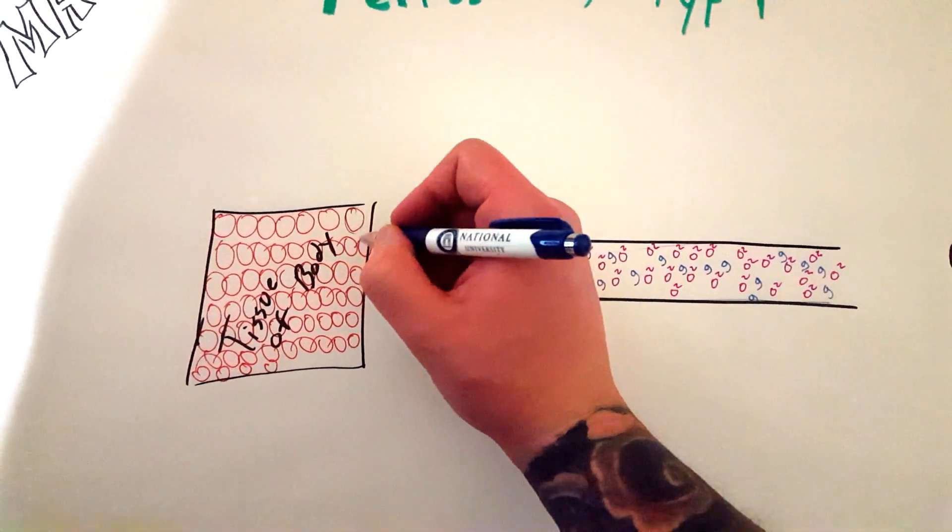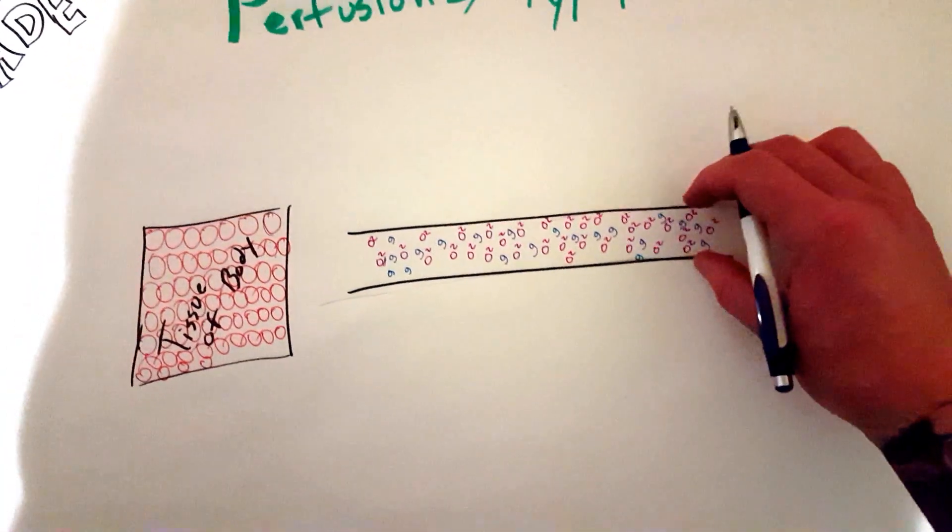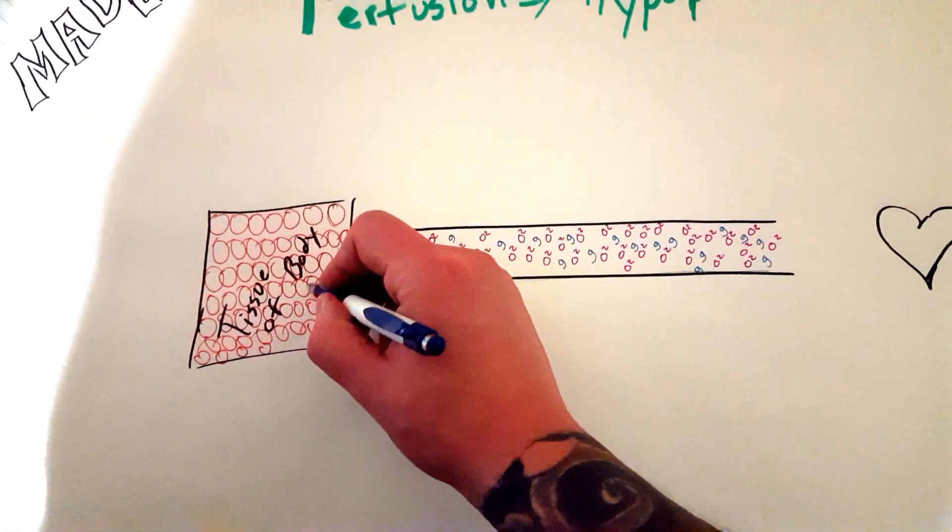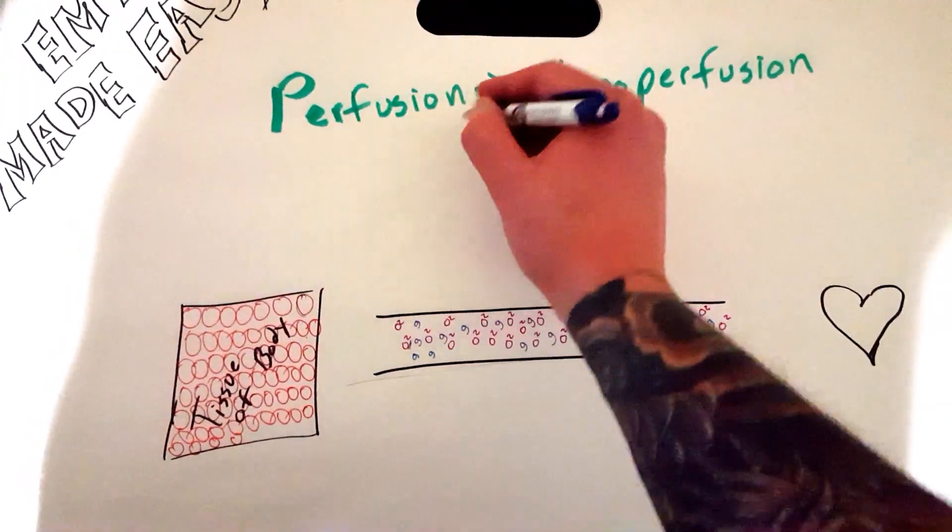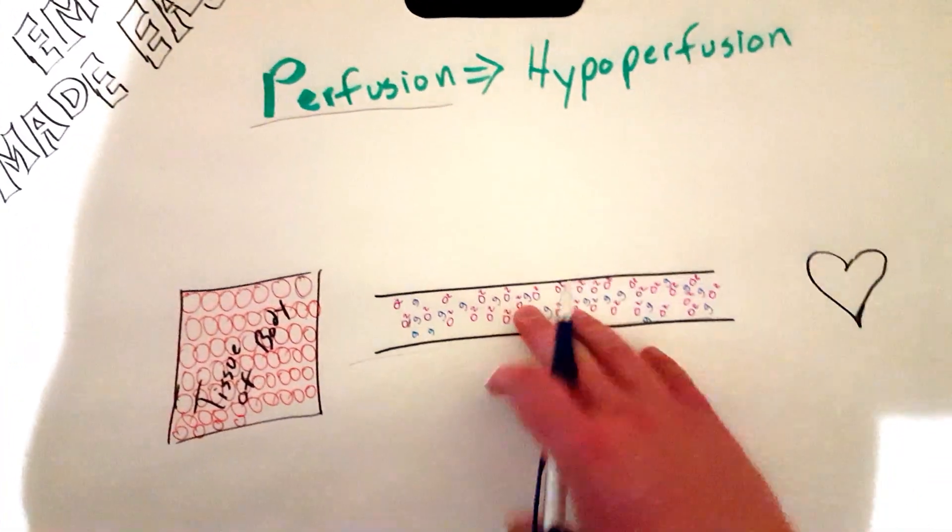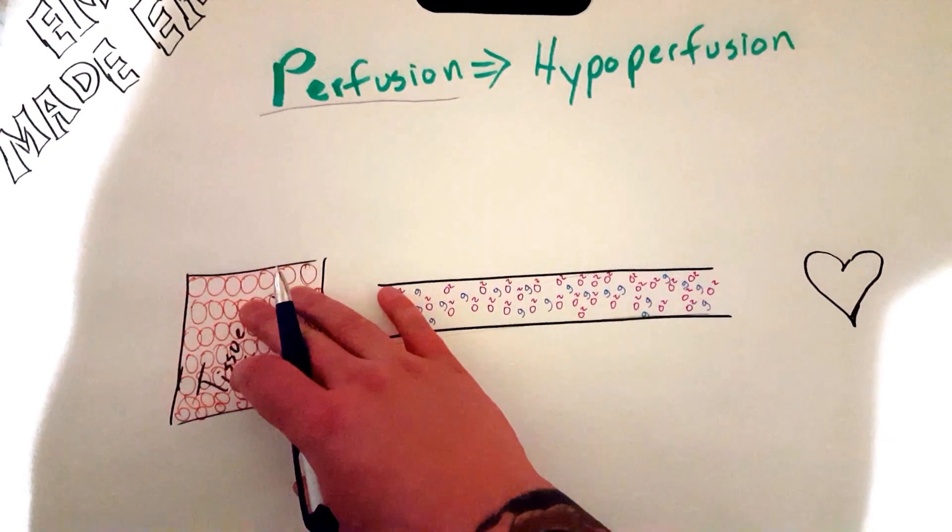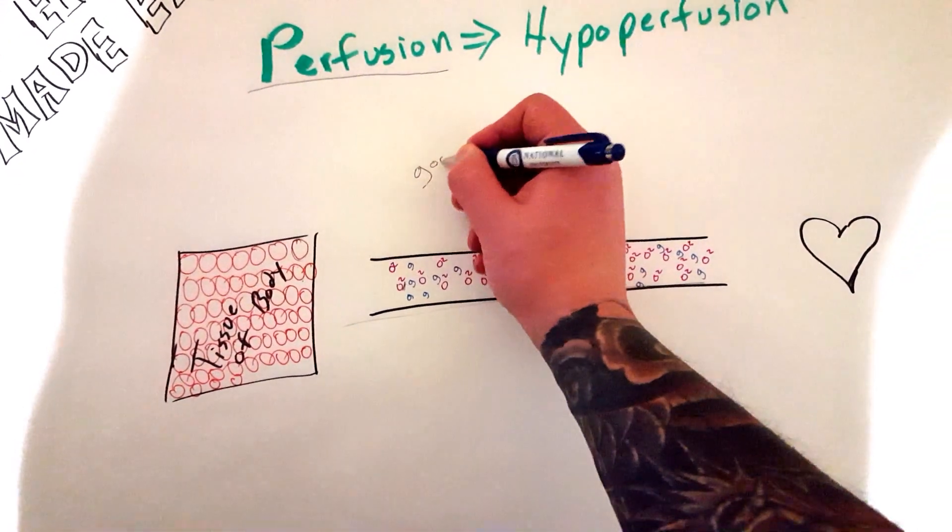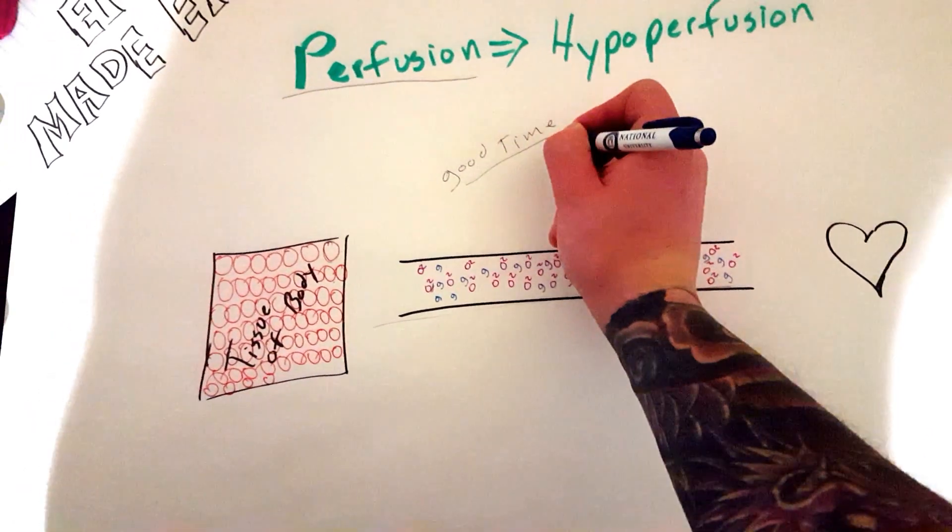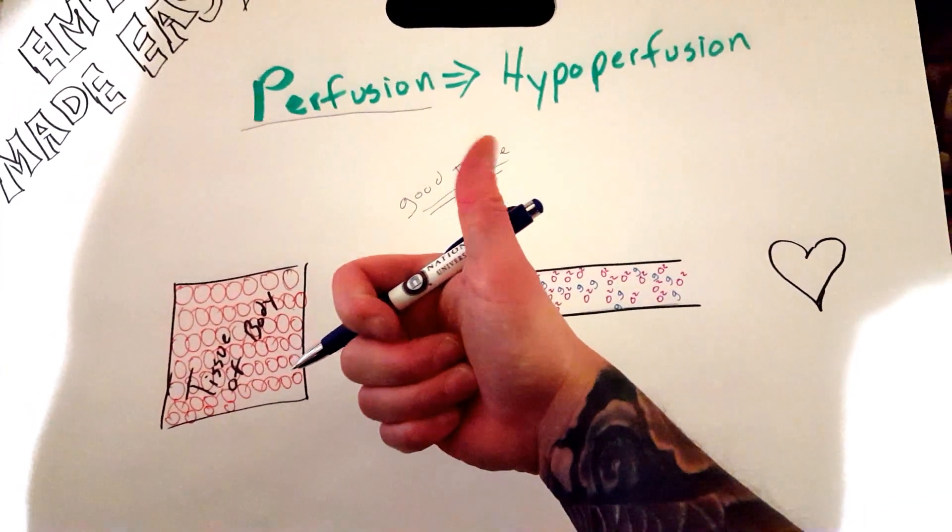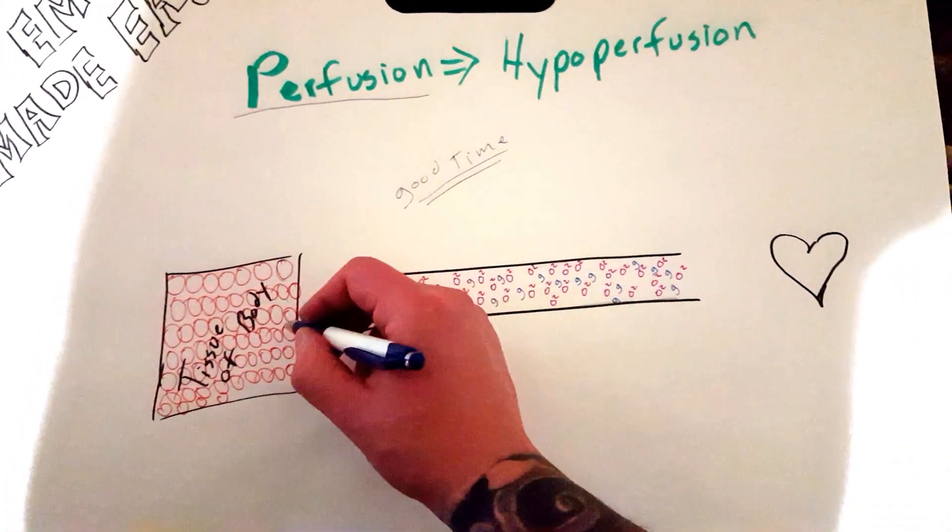So cells make tissue, tissue makes organs, and the vessel carries the blood to your tissues. What happens in perfusion, what this really means, is that oxygen and nutrients are getting to the tissues of your body in a timely manner, in a good time. Deliveries are being made every time within a good time frame.